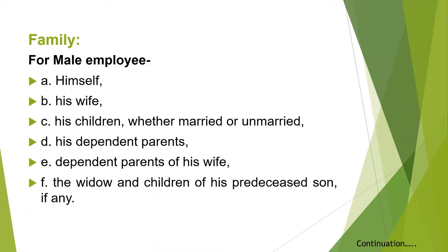As per the Payment of Gratuity Act 1972, 'family' for male employees means himself, his wife, his children whether married or unmarried, his dependent parents, the dependent parents of his wife, and the widow and children of his predeceased son. A predeceased son means a son who has died — so that dead son's wife and children are also included in the family.